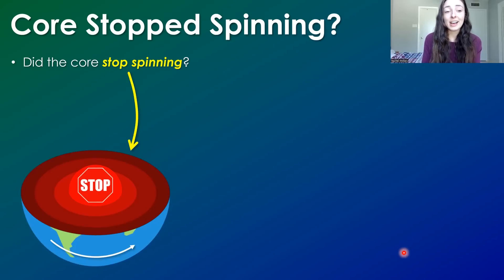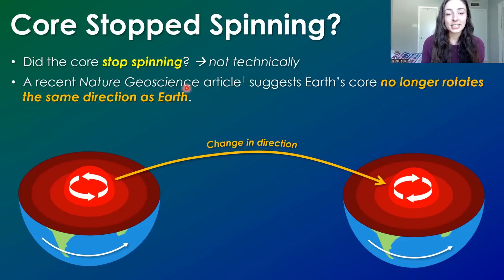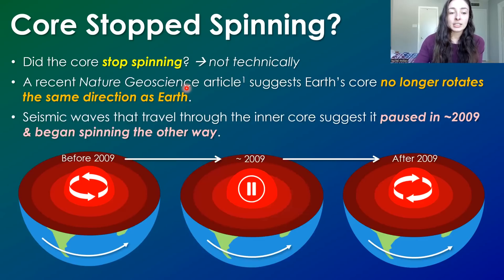So down to the question at hand, has Earth's core stopped spinning? Well, not technically. The thing that initially caused all of this chaos around whether Earth's core has stopped spinning is a recent Nature Geoscience article that suggests that Earth's core no longer rotates in the same direction as Earth, and thus it had to have stopped spinning the same direction as Earth, and then started going the other way. And this paper used seismic waves and the way that they travel through the inner core to suggest that Earth's core stopped or paused from spinning in around late 2009, and then began spinning the other direction. So yes, it's stopped or paused at one point.